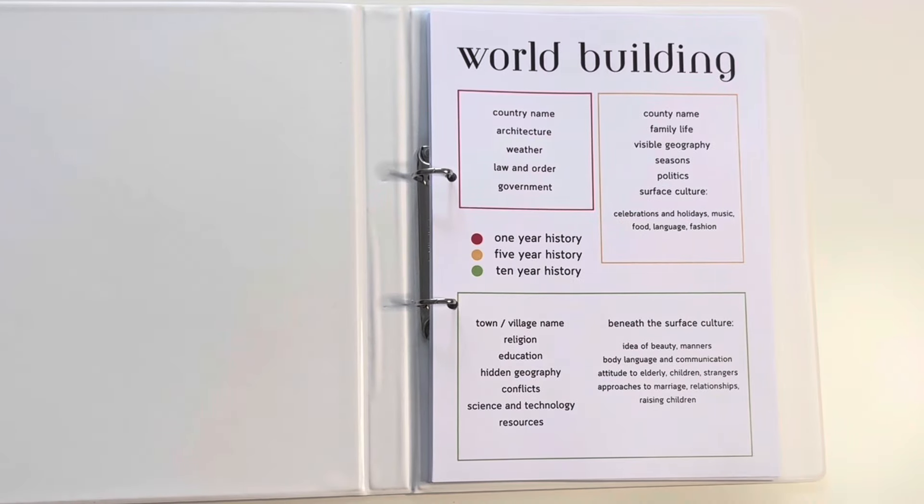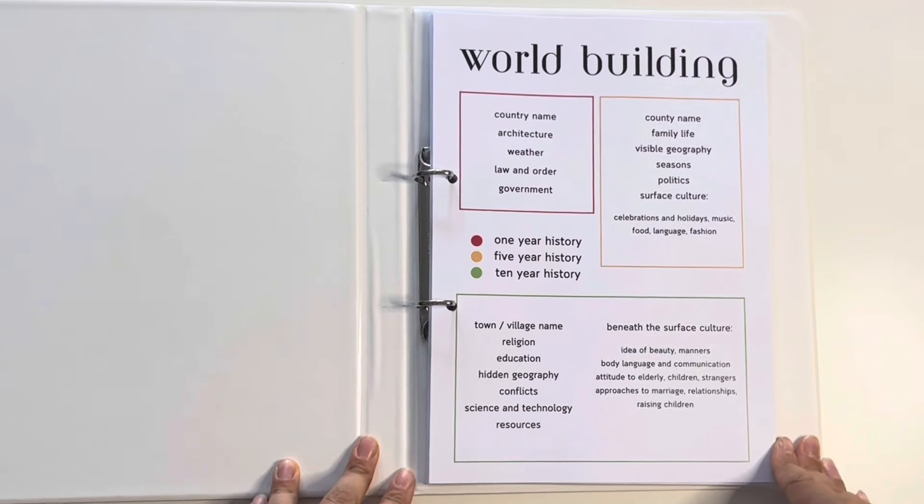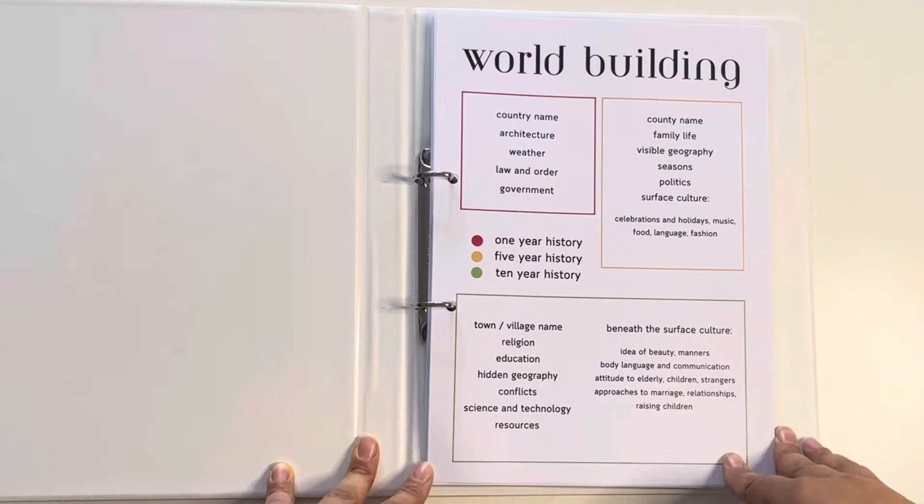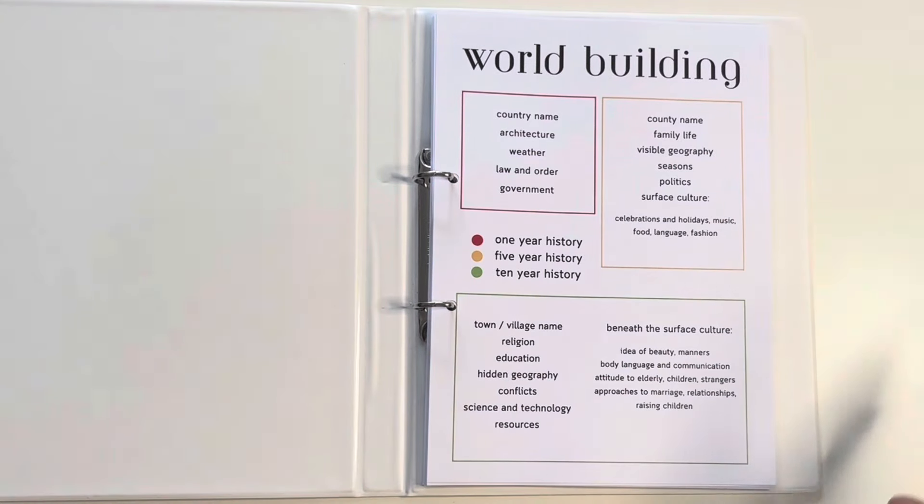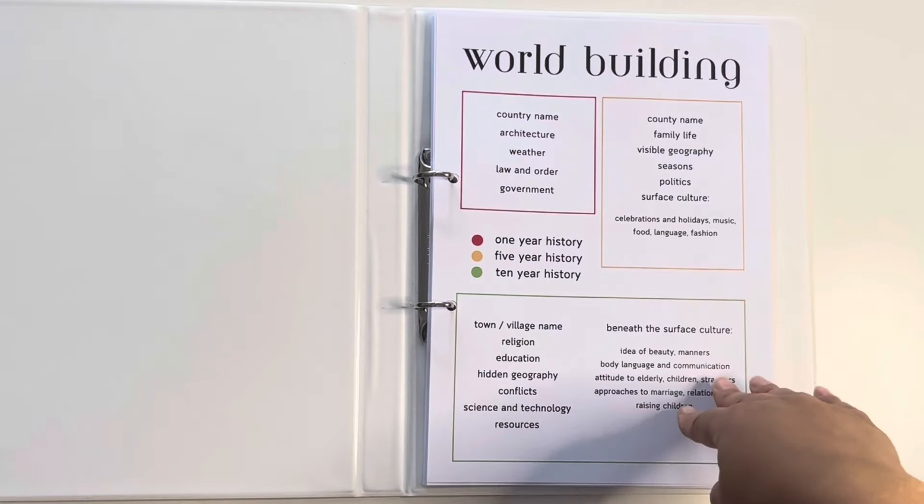We start with world building. As you can see, we do have the lovely honeymoon method or the traffic light system going on here, red, orange and green. And depending on how I'm feeling when I am doing the world building will depend on which of these I do.